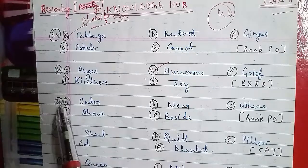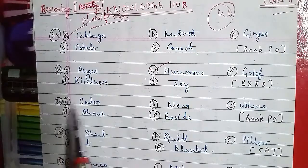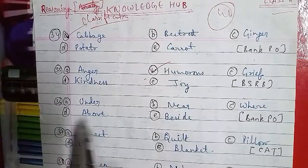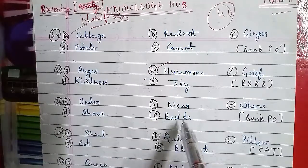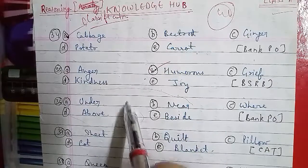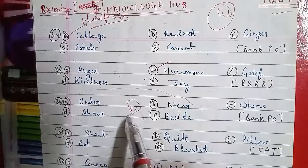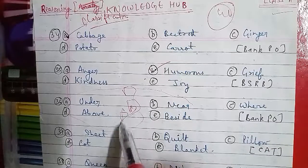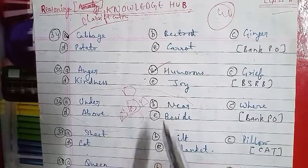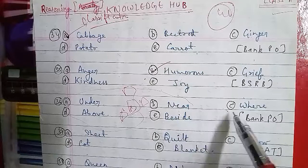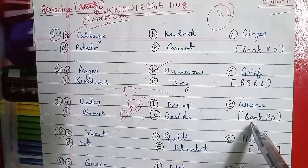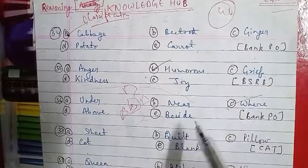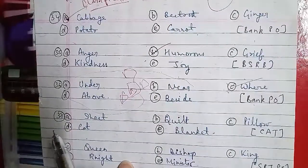Question number 36: Option A is Under, B is Near, C is Where, D is Above, and E is Beside. These are all location or positional words — something can be inside, above, near, or beside something. But 'Where' is a question word, not a positional word. So 'Where' is the odd one out, as asked in Bank PO.